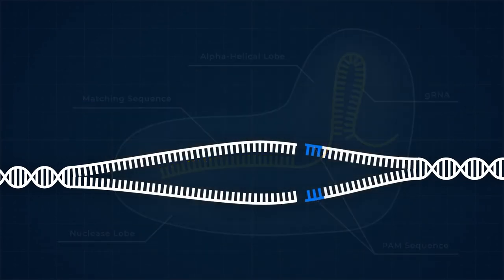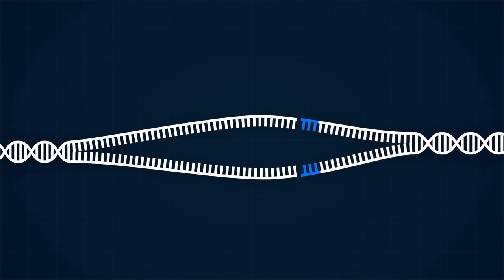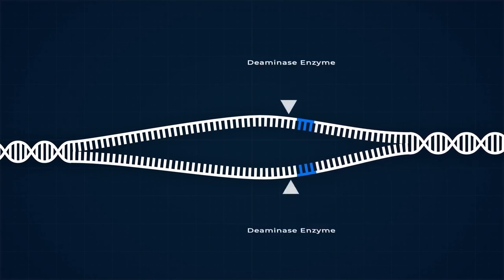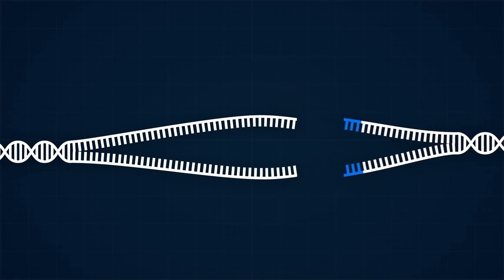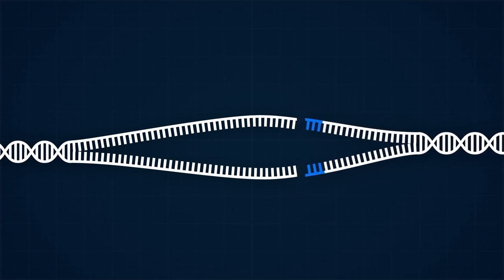Depending on the strategy needed, a variety of things could happen at this point. A deaminase enzyme that can target particular bases for mutation, producing entirely new mutations, can be added to Cas9. Suppose the target DNA is thought to be undesirable. In that case, it can be simply cut and removed. New DNA can be inserted at the cutting location through a procedure known as homology-directed repair.